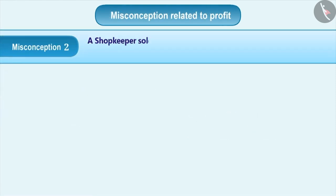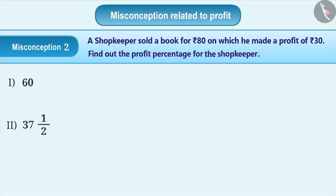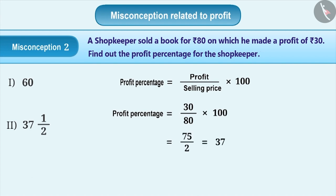Misconception 2: A shopkeeper sold a book for Rs. 80 on which he made a profit of Rs. 30. Find out the profit percent for the shopkeeper. Some students try to find the profit or loss percent on selling price. That means they find the profit percent as: profit percent is equal to 30/80 into 100, which is equal to 37.5.